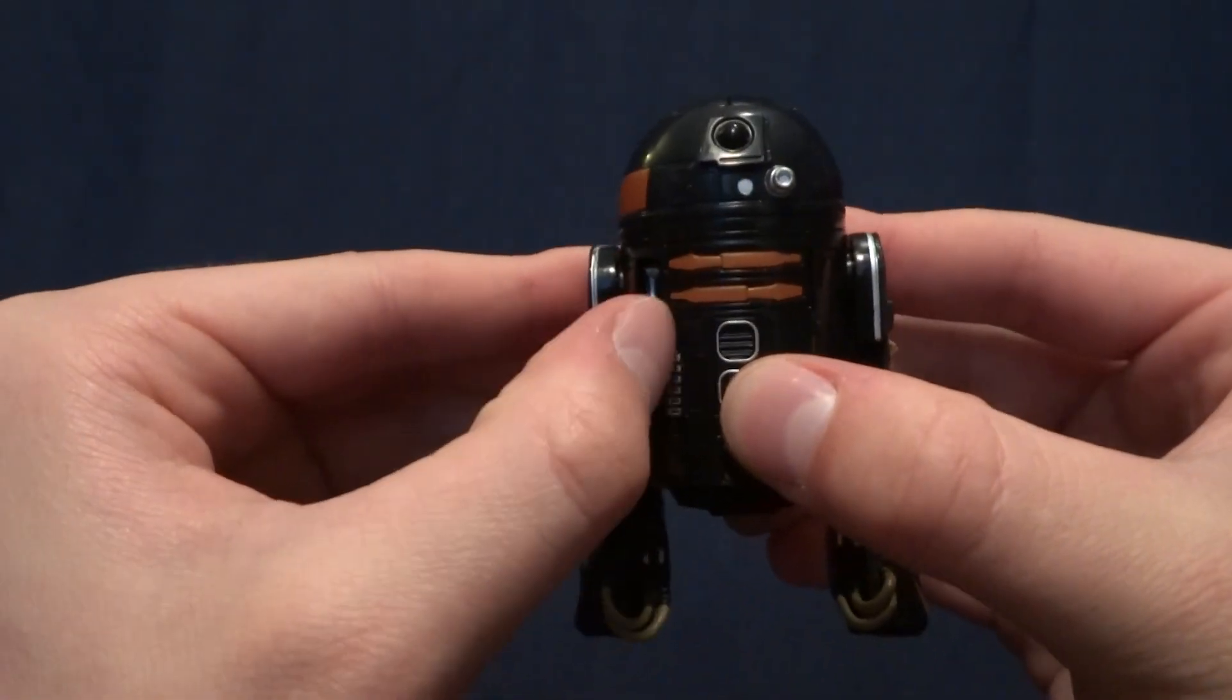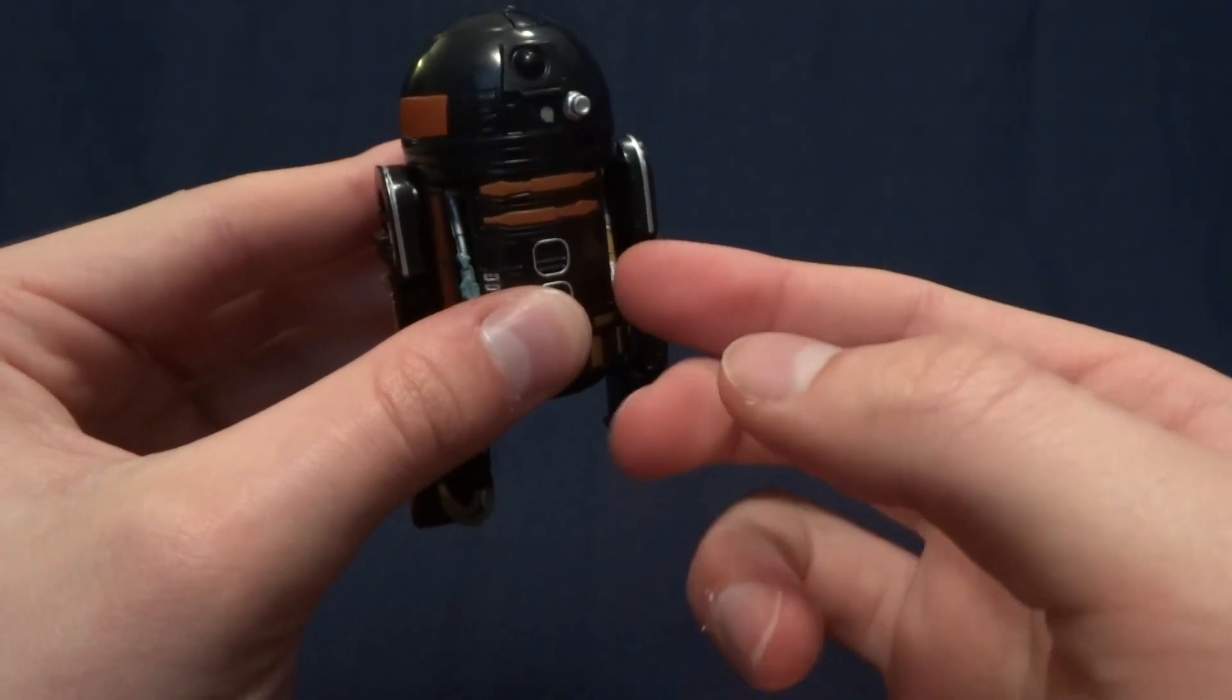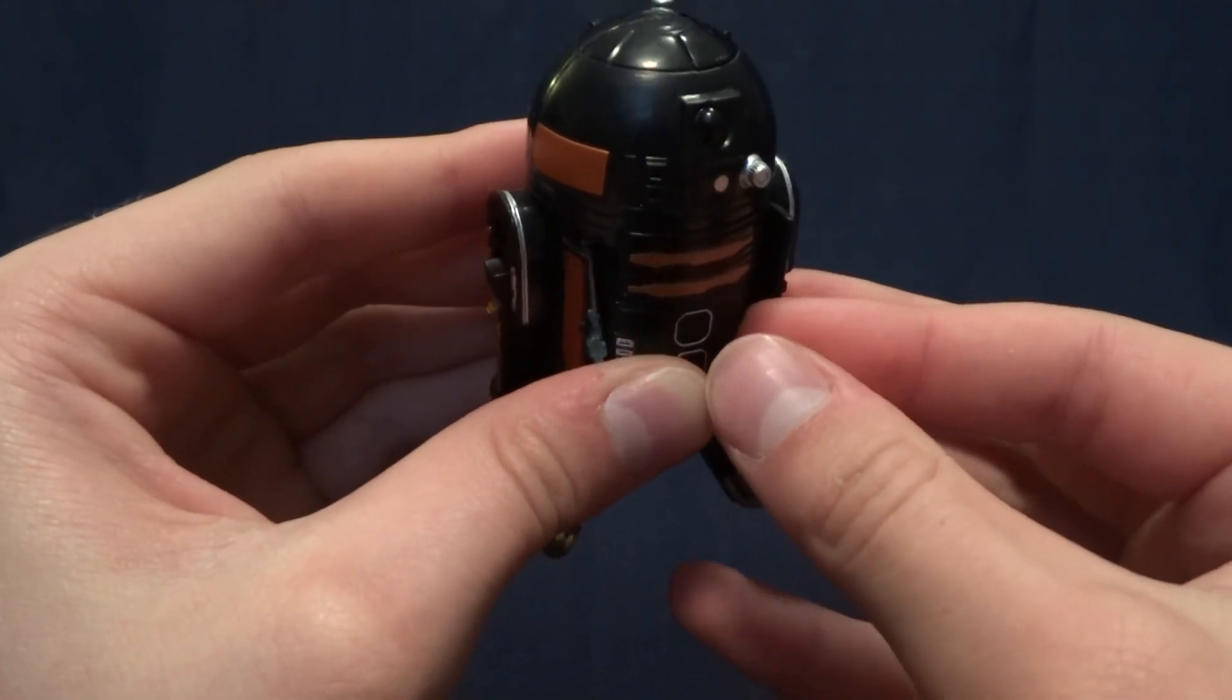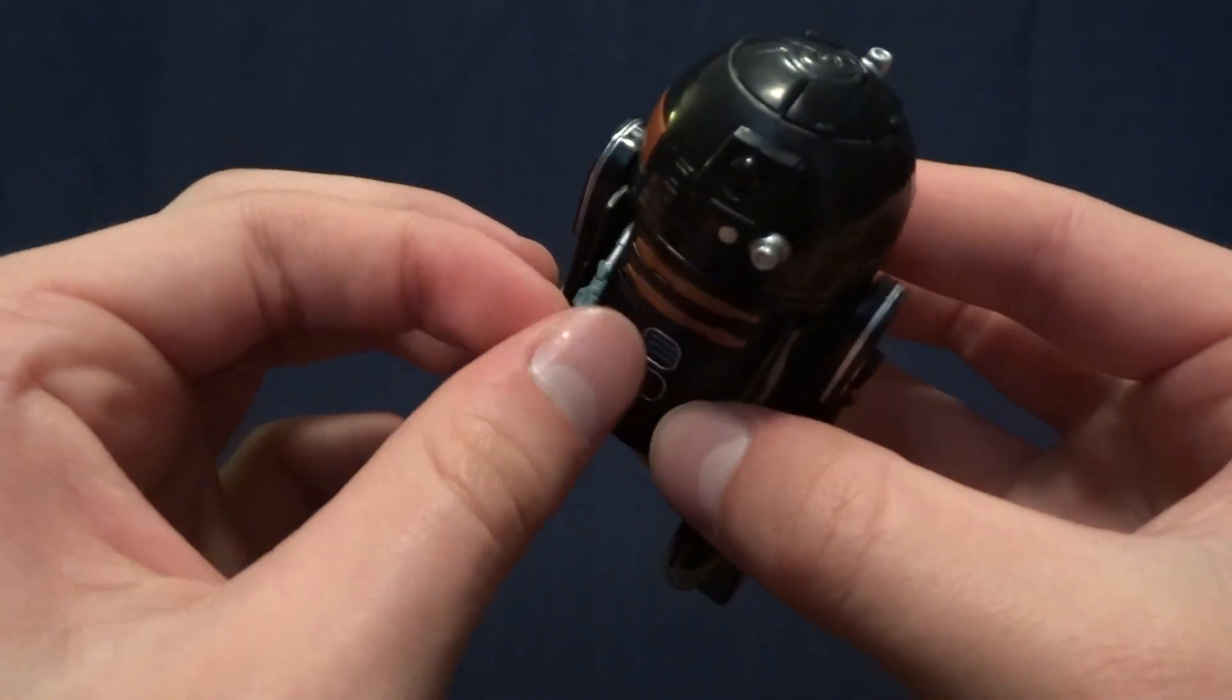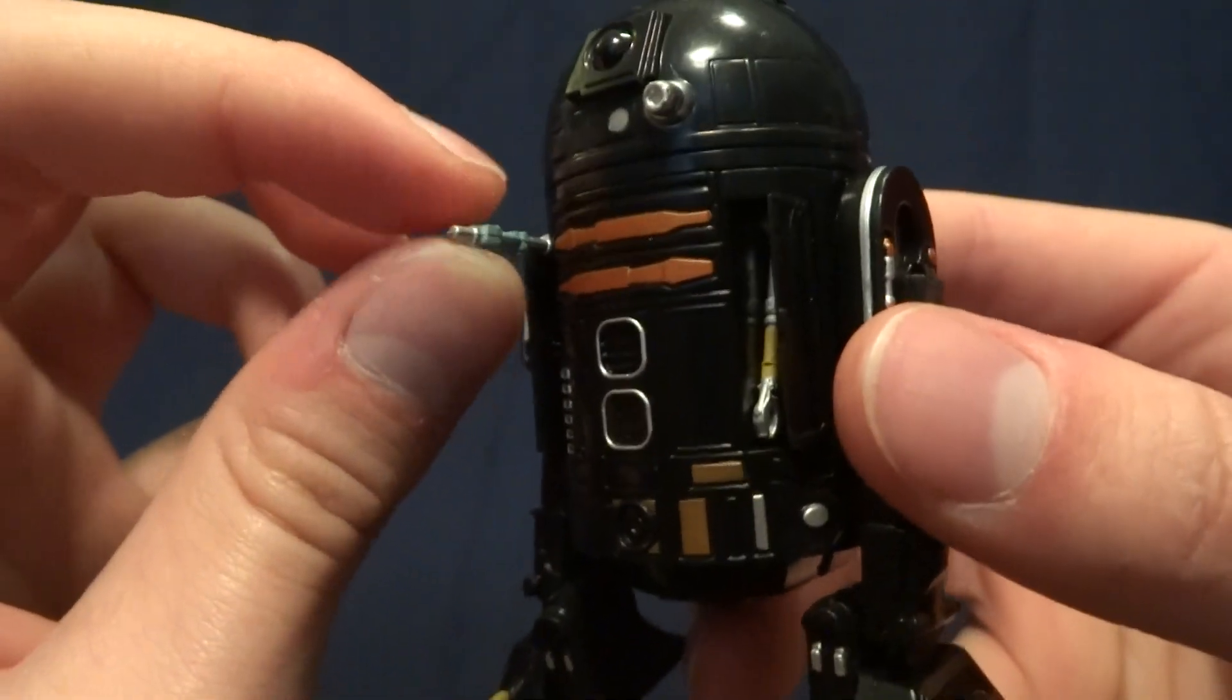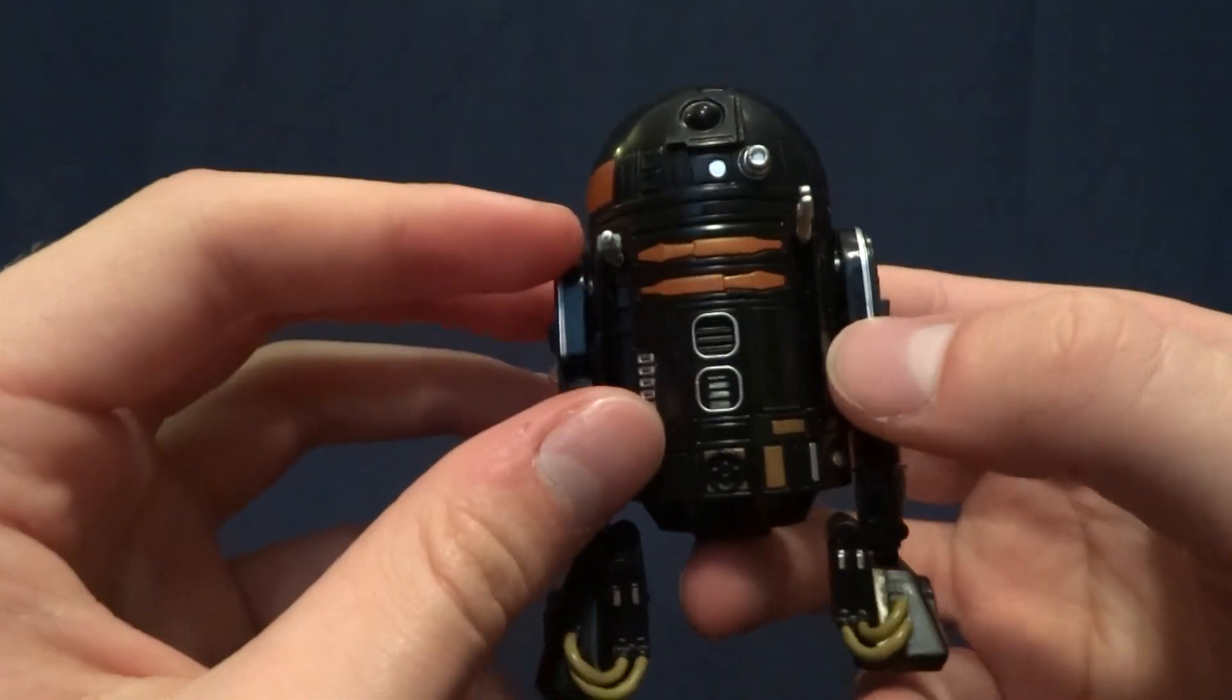He does have these two panels on the front here, which open up, and you can pull out these. This, on this side here, it's a little gripper arm, if I can get it out here on camera. Let's see. I'll try this other side here. There we go. The other side pulls out just like that, but this is the little code breaker thing that he's got. And then on this side, it's a little clamp. And that's really cool.